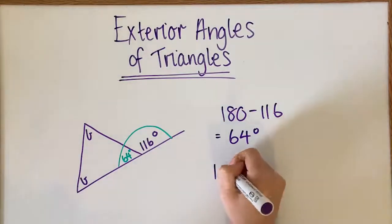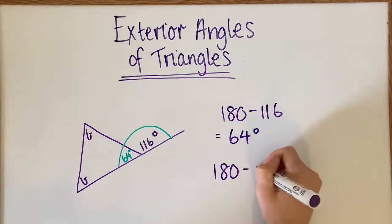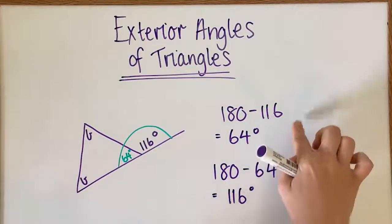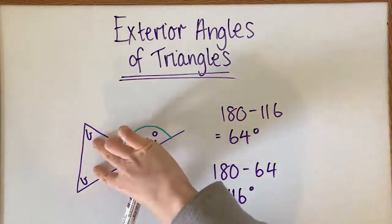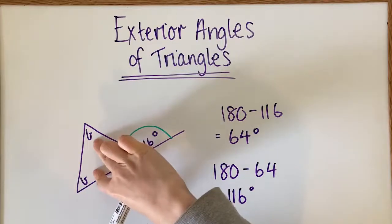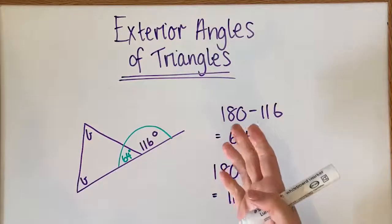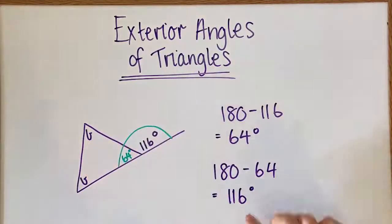Now, 180 minus 64 is going to give us 116 degrees again. That kind of goes back to my point about the two angles that aren't touching the exterior angle adding up to that exterior angle. That's proven here—this and this equal this.